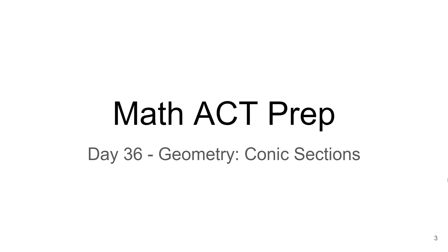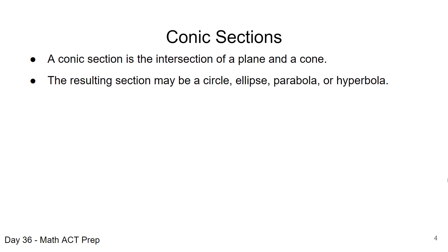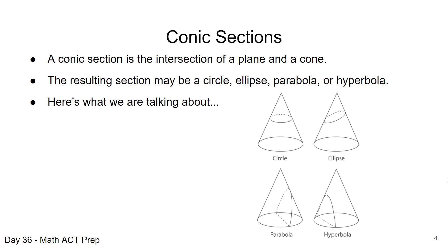In today's video, we're going to be talking about the geometry topic of conic sections and what you can usually expect to see on the ACT related to this topic. A conic section is an intersection of a plane and a cone, and we're talking about circles, ellipses, parabolas, and hyperbolas. You can see how each of these figures are formed from that intersection in these figures.